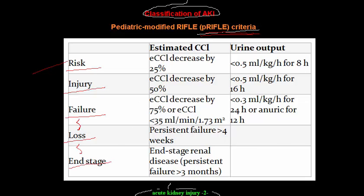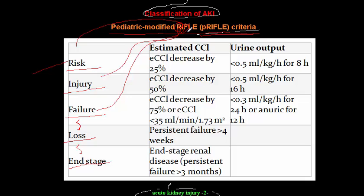The RIFLE criteria depend on two important parameters: creatinine and urine output. There are multiple versions of the criteria from 2002 and 2004, but the latest one for pediatrics is the Pediatric Modified RIFLE criteria. R stands for Risk, I for Injury, F for Failure, L for Loss, and E for End-stage renal disease.